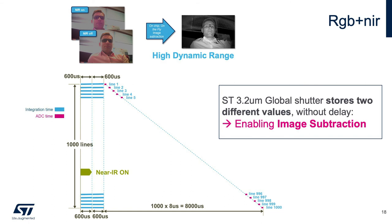Here is the same solution but now using RGB and near infrared. They have to be the same timeline length for each set of data — 600 microseconds for near infrared and 600 microseconds for RGB. Now I can subtract one from the other evenly and have good data in both. Again, these are taken concurrently, so again no ghosting, no jitter.